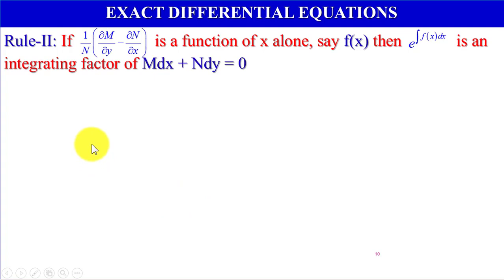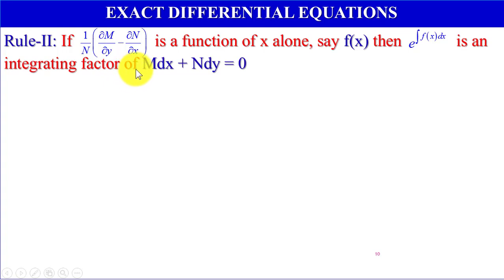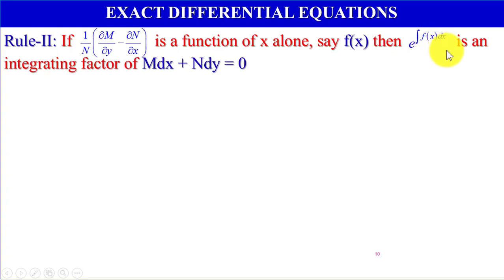Rule 2: If (1/N)(del M by del y minus del N by del x) is a function of x alone, say f(x), then e to the power integration of f(x) dx is an integrating factor of M dx plus N dy equals 0.